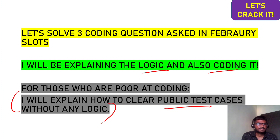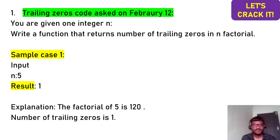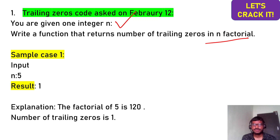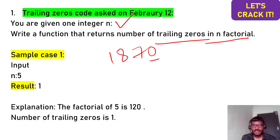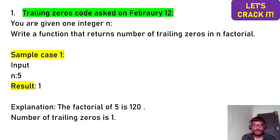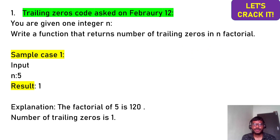Here comes the very first question, titled 'Trailing Zeros.' You are given an integer n, write a function that returns the number of trailing zeros in n factorial. First, you need to understand the term trailing zeros. For example, the number 1870 has one trailing zero — zeros occurring at the end of the digit. Another number 18200 has two trailing zeros.